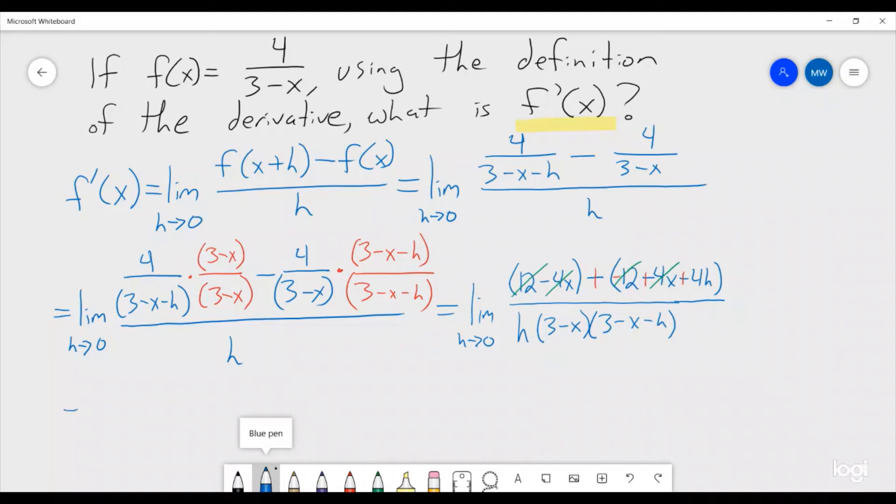So, we get the limit as h goes to 0 of 4h divided by h, 3 minus x, 3 minus x minus h. The h's now cancel. And now, we can plug in h equals 0. And we get 4 divided by 3 minus x squared. And that is the derivative of 4 divided by 3 minus x.